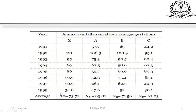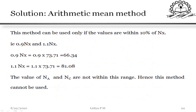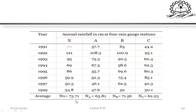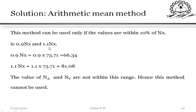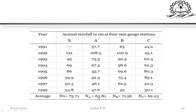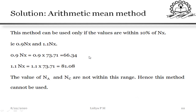Next, check whether the normal annual precipitation of adjacent stations are within 10 percent of the missing station's normal average precipitation (NX = 73.71). The upper limit is 1.1 × NX = 81.08 and the lower limit is 0.9 × NX = 66.34. Checking NA, NB, and NC against this range: NA (63.81) and NC (62.23) are both less than the lower limit of 66.34.